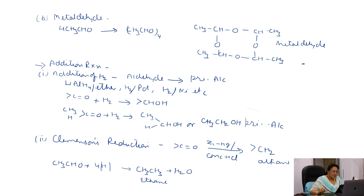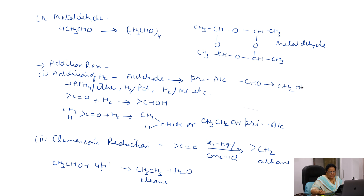The next property is addition reaction — addition of hydrogen. Aldehydes are reduced to primary alcohols; the CHO group is reduced to CH2OH. Acetaldehyde is reduced to ethyl alcohol, which is a primary alcohol. This reaction is carried out in the presence of lithium aluminum hydride and ether, or hydrogen in the presence of palladium, or hydrogen in the presence of nickel.